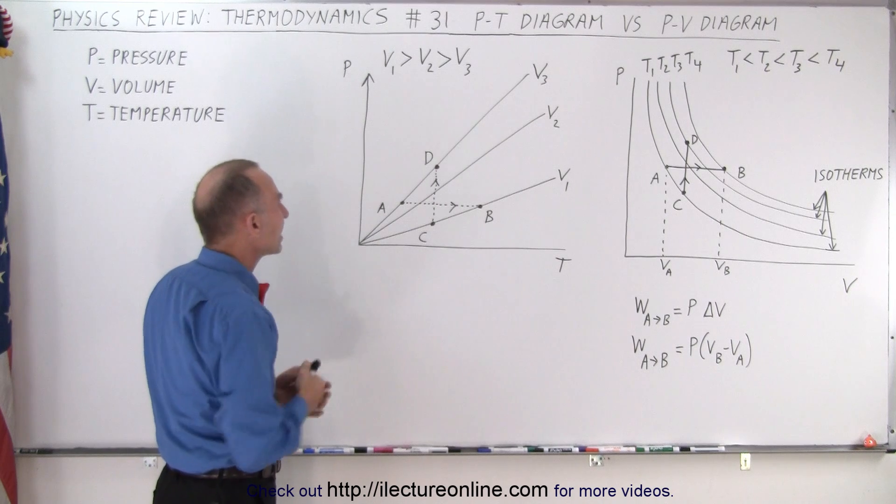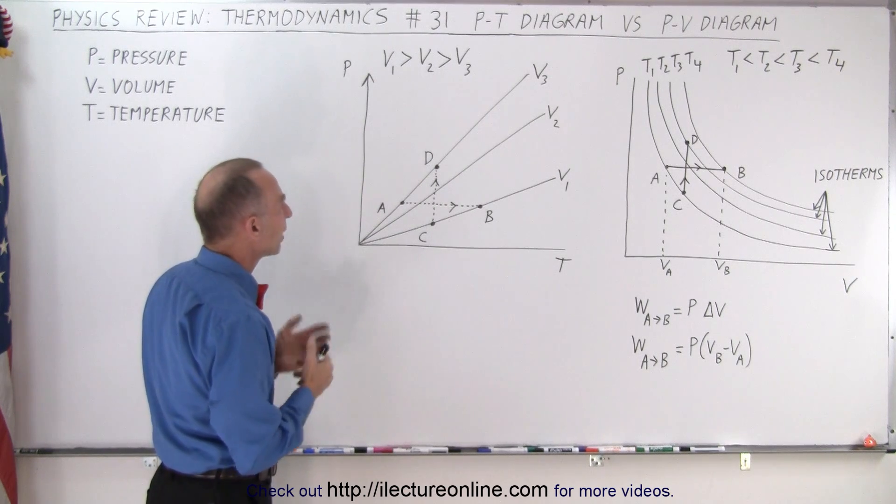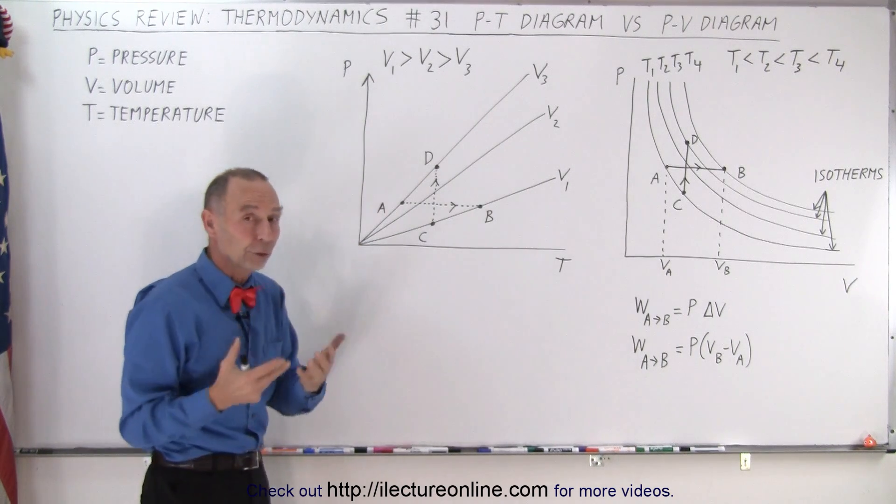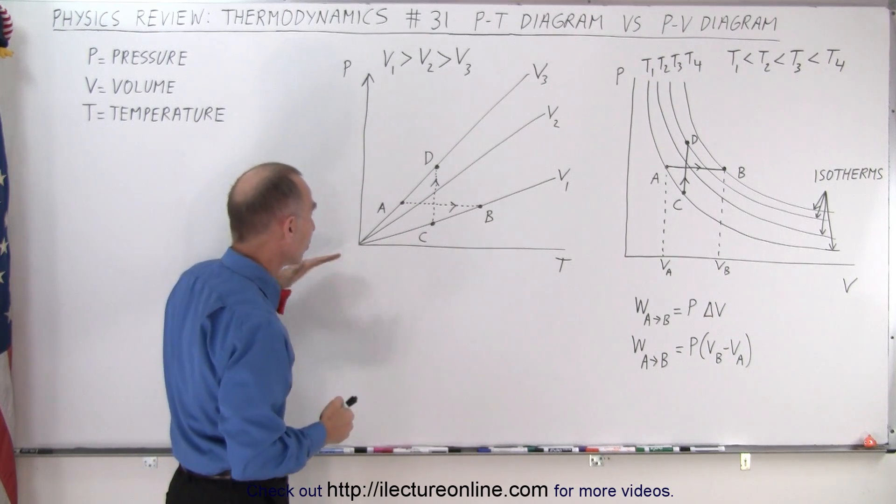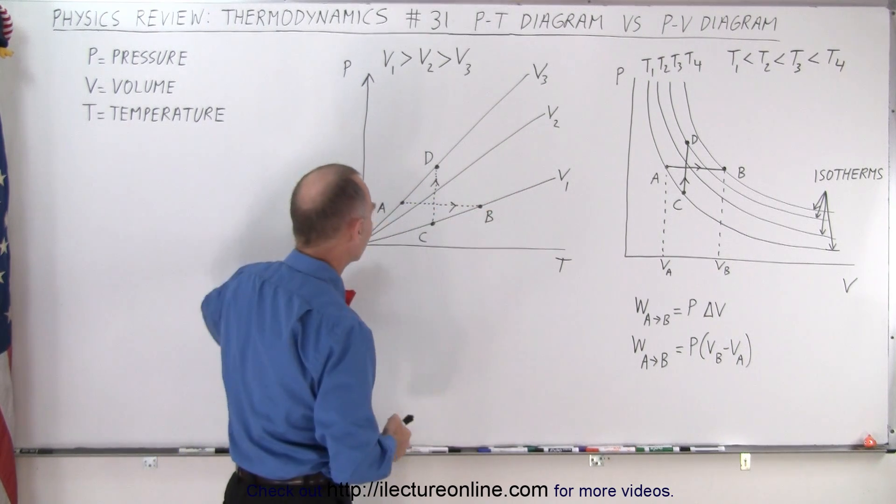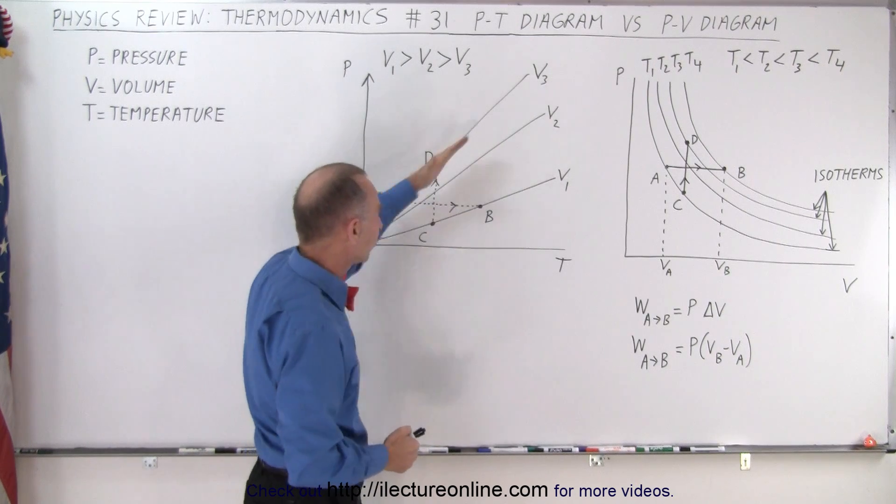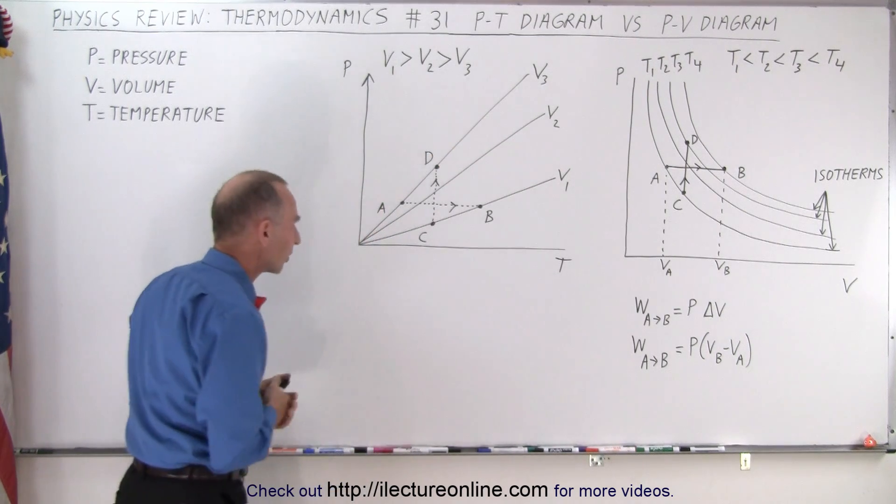Now let's go to a PT diagram. Notice we have lines representing the third state variable, which is the volume of the gas. And notice that these lines are straight lines, like y equals mx plus b on an algebra graph.